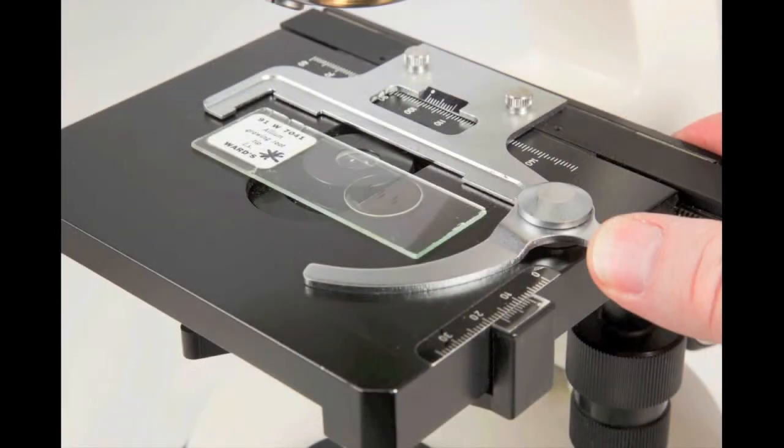To begin viewing a specimen, use the lever to retract the movable arm on the slide holder. Place the slide on the flat surface of the stage and release the lever. The arm will hold the slide firmly in place.